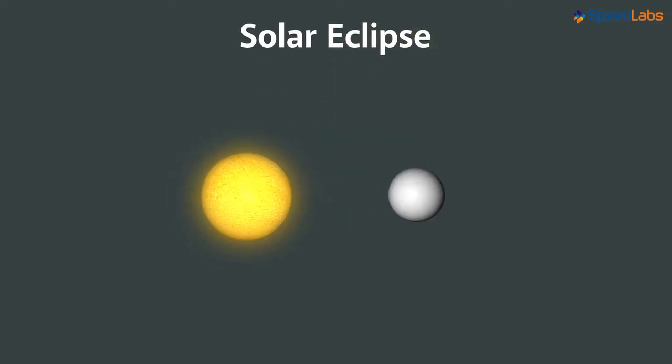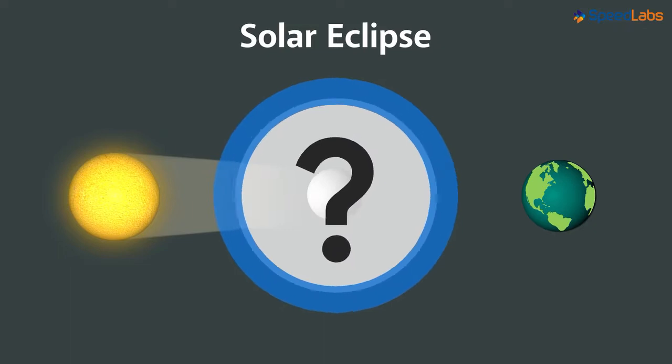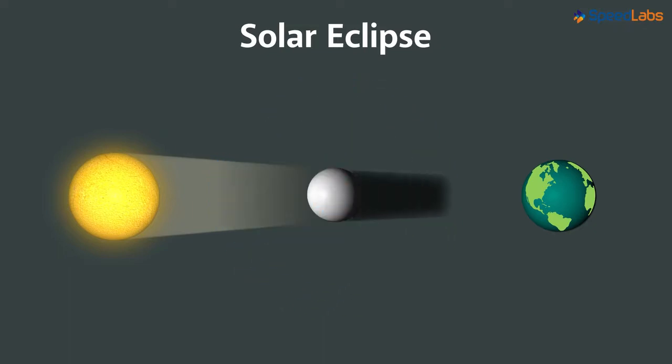Solar eclipse occurs when the moon is between the sun and the earth, where the moon blocks the light of the sun. What will this result in? The shadow of the moon will be formed on the earth.